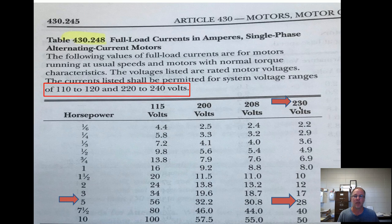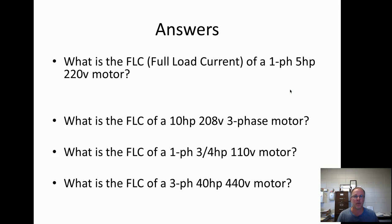Same thing with 115 volts — if the question calls for a 110-volt five-horsepower motor, you're going to use the 115-volt chart. That's kind of a trick question they throw at you sometimes on the Journeyman prep.